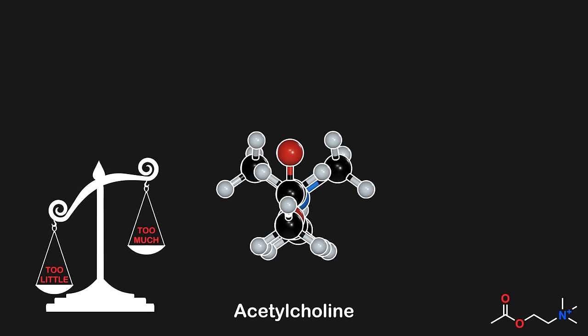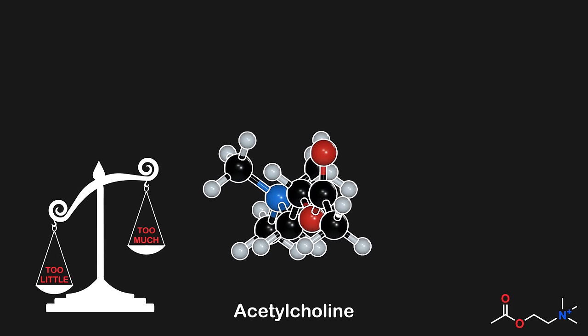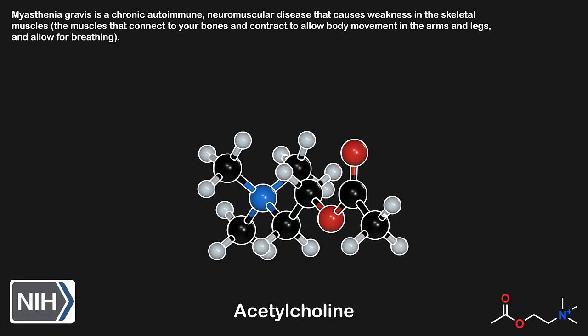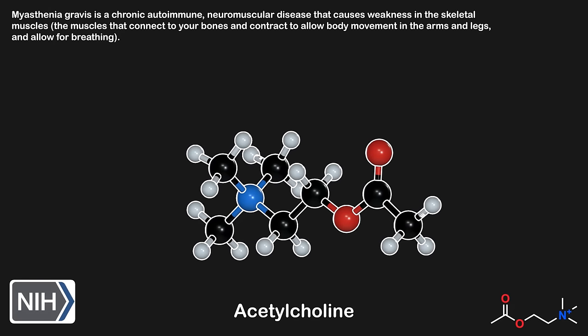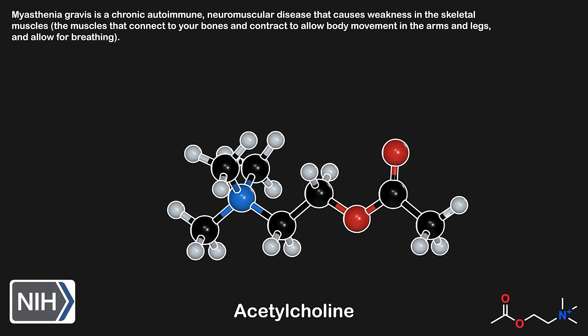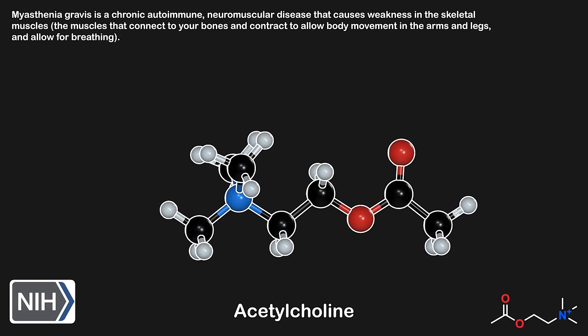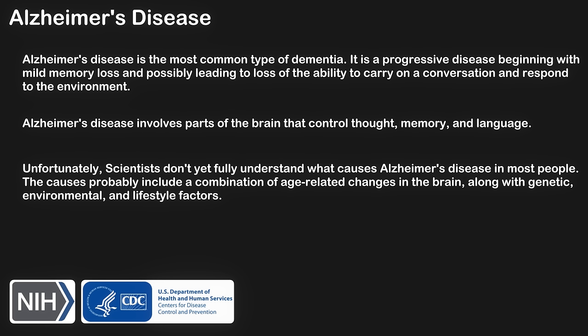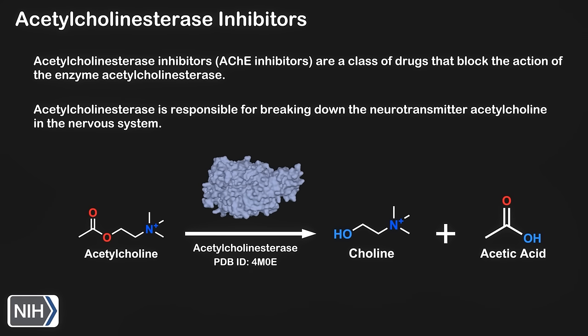However, just like dopamine, an imbalance in acetylcholine levels can lead to adverse effects. One such example is myasthenia gravis, an autoimmune disease characterized by a decreased number of acetylcholine receptors, leading to symptoms like muscle weakness and fatigue. In the context of mental health, Alzheimer's disease is marked by progressive memory loss and cognitive decline, and this has been linked to deficiencies in acetylcholine. To manage Alzheimer's, a common therapeutic approach involves the use of acetylcholine esterase inhibitors. These drugs are designed to inhibit the breakdown of acetylcholine in the brain, thereby increasing its level and improving cognitive function.